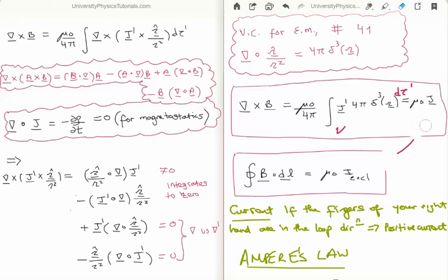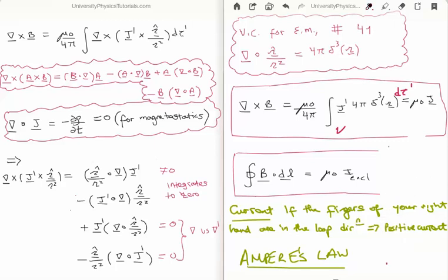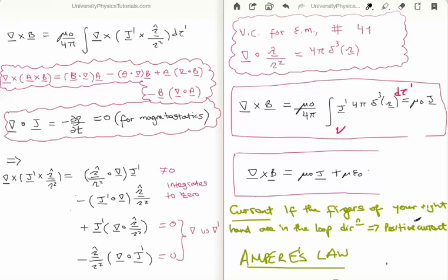For completeness, the full form of Ampere's law including the Maxwell correction term in differential form is: ∇×B = μ₀J + μ₀ε₀ ∂E/∂t. The second term is irrelevant in magnetostatics. Thanks for watching — please share with friends, subscribe, and leave a comment below.